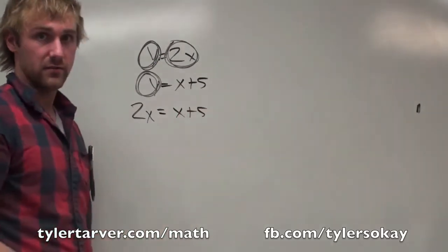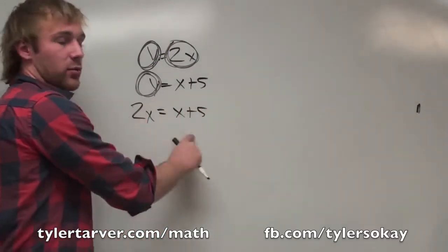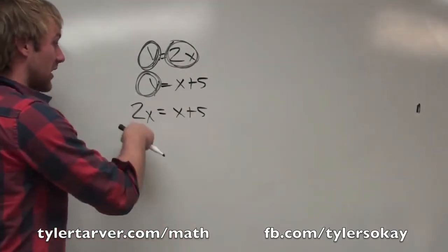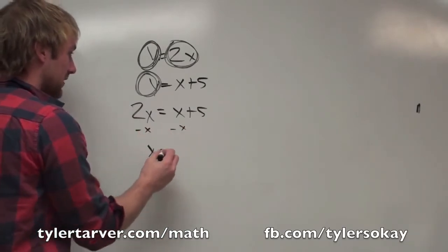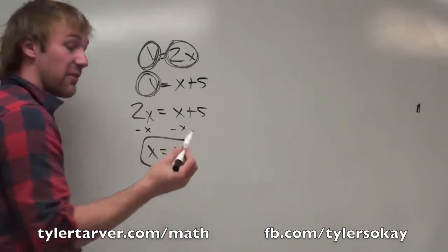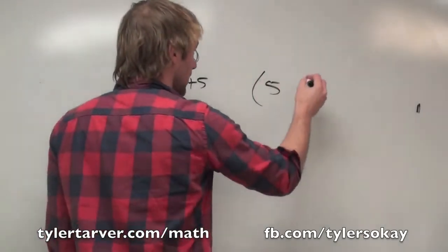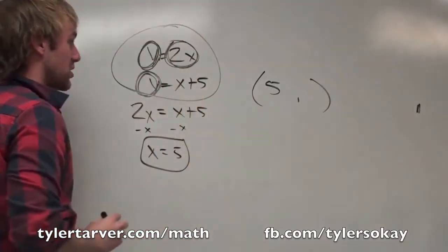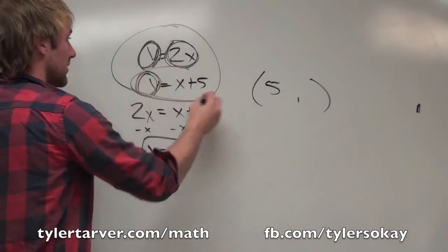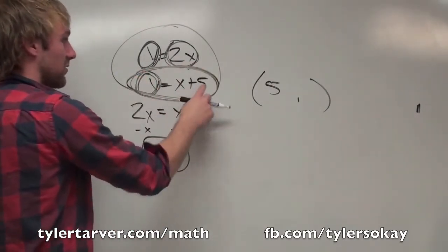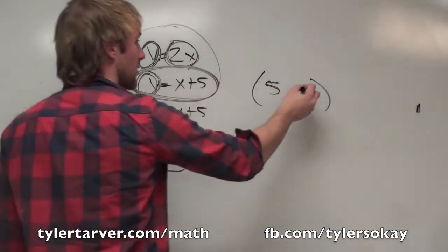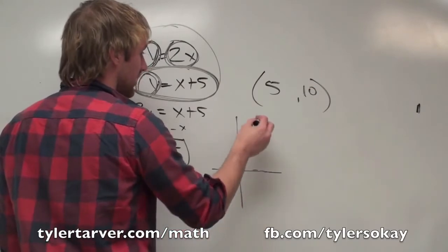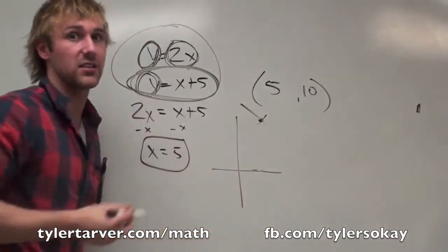Why do I want to do that? Because now I only have one variable and I can actually solve for an answer. I subtract an x from both sides, which gives me x equals 5. To find y, I plug that x into either equation. Using y equals x plus 5: what's 5 plus 5? 10. So y equals 10. That means these two lines cross on a graph at (5, 10).